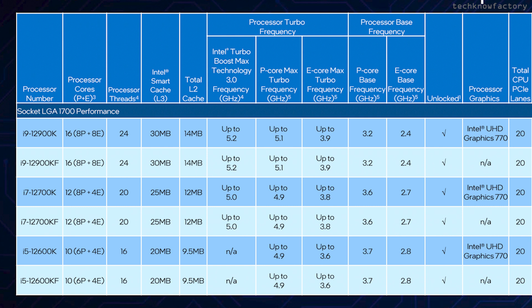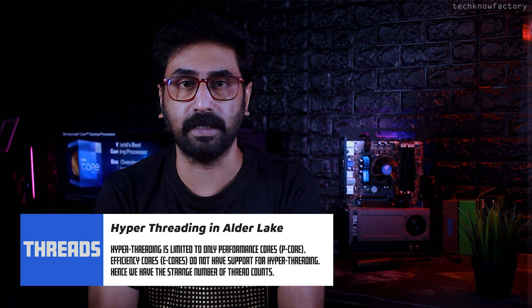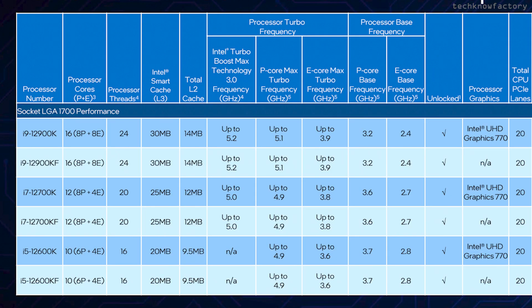The i9-12900K has 24 threads: 8 Performance cores with hyper-threading give 16 threads, plus 8 Efficiency cores without hyper-threading give 8 more, totaling 24 threads. The i7-12700K and KF have 12 cores — 8 Performance cores and 4 Efficiency cores. The i5-12600K and KF have 10 cores — 6 Performance cores and 4 Efficiency cores. Cache memory: i9 has 30MB L3 and 14MB L2; i7 has 25MB L3; i5 has 20MB L3.